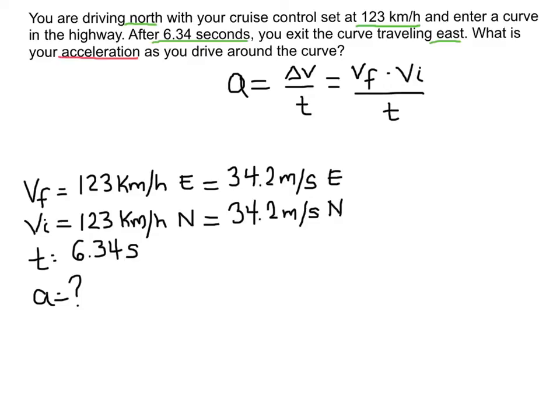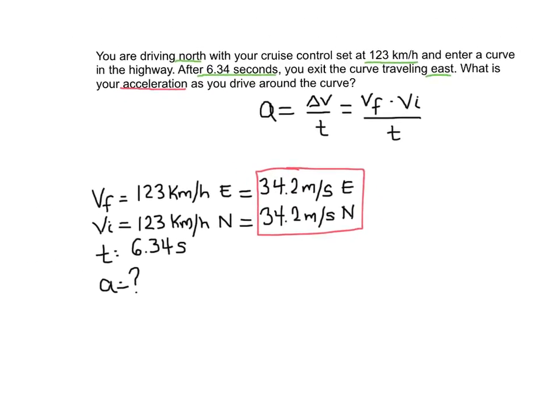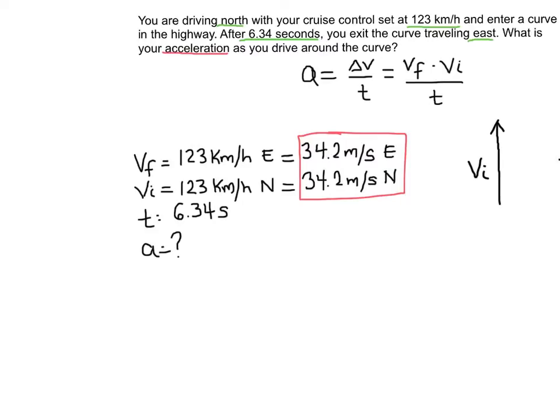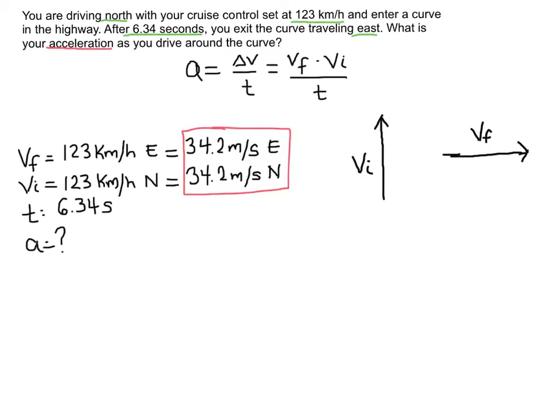So I'm going to draw these two vectors right here so I can see what they look like and it's going to help me a lot as I try to solve this problem. This first one here is my v initial and the second one here is my v final. They're both the same size, same length arrow, and I have the initial pointing in the north and then the final pointing in the east.